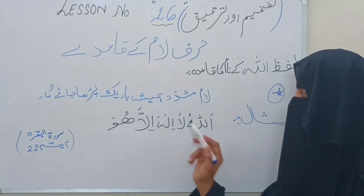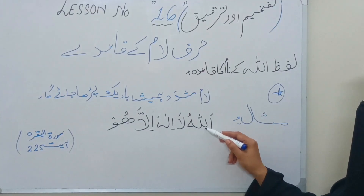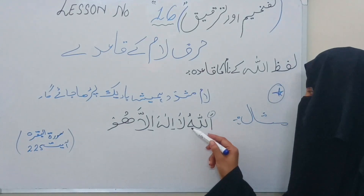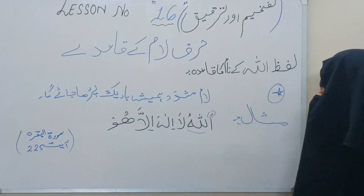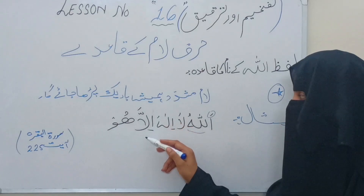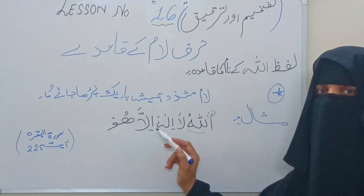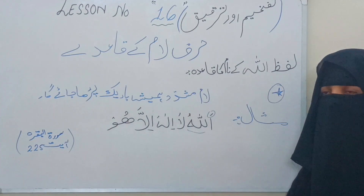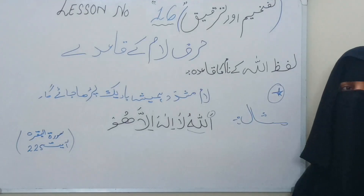یہاں پر اللہ سبحانہ وتعالیٰ کا نام آیا، اس سے پہلے لیٹر الف ہے، الف کے اوپر زبر یعنی فتحہ ہے — تو اس کنڈیشن میں اللہ کے نام کو ہم پور یعنی موٹا پڑھیں گے، جیسے rule number 1 میں دیکھا۔ اور لام مشدد کو ہمیشہ باریک پڑھتے ہیں۔